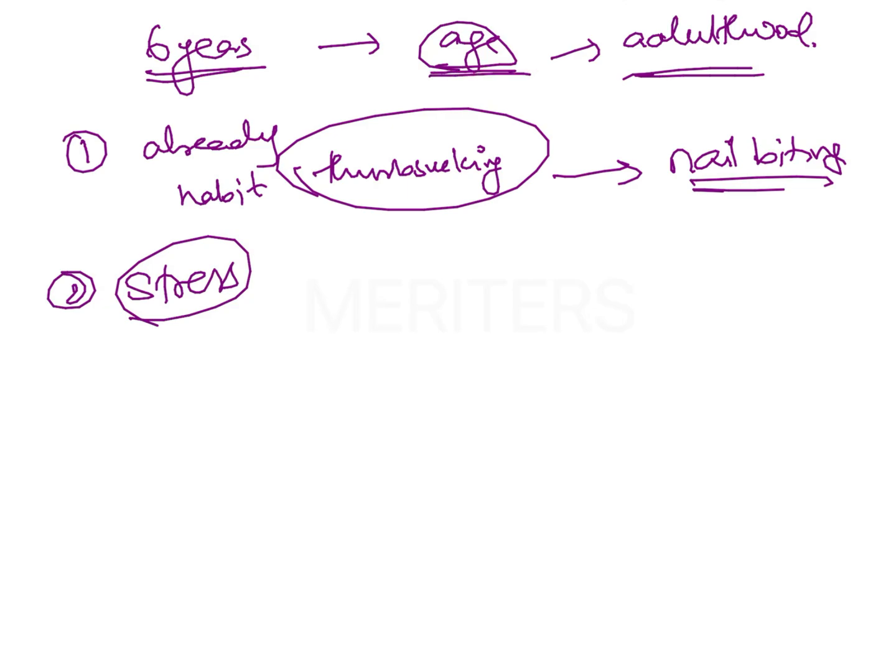Even adults sometimes engage in nail biting habit. This usually develops as a result of stress. When the child starts going to school, there's sudden stress - academic stress, examination stress, or peer pressure. These stresses result in the child releasing stress through nail biting habit, which acts as a type of oral gratification.